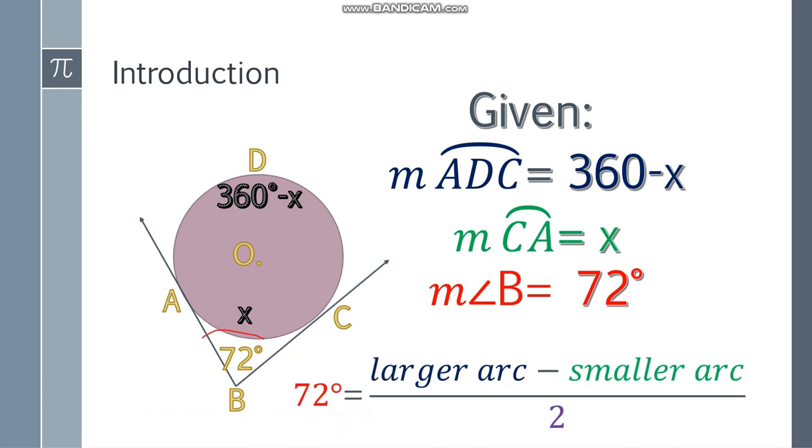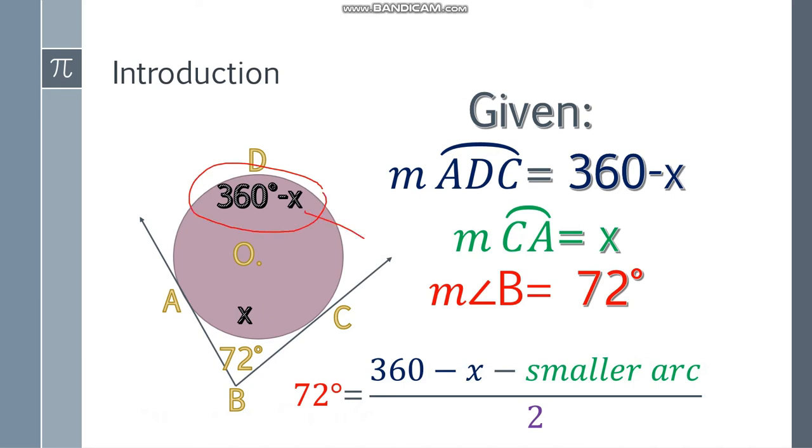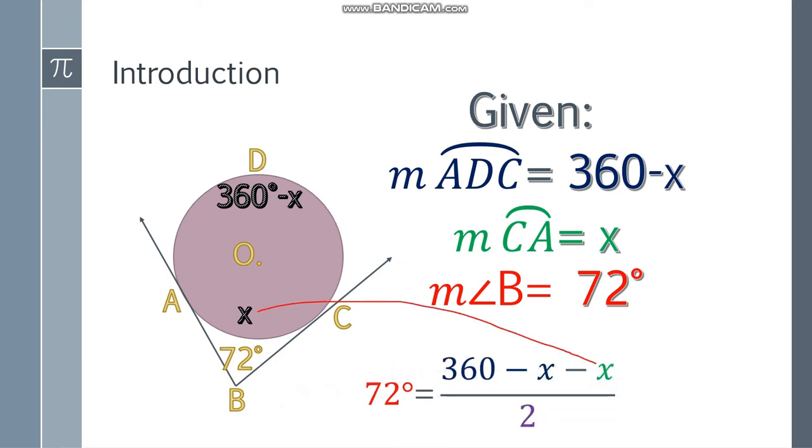So let's substitute it. So 72 here, the larger arc will be 360 minus x, and the smaller arc will be x. Simplify this one, 360 minus x minus x, that will be 360 minus 2x.